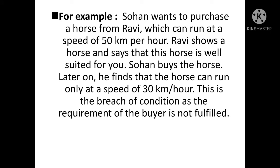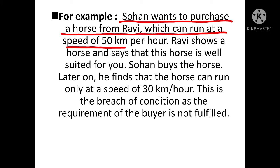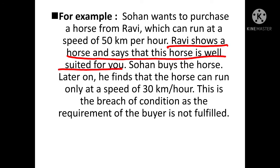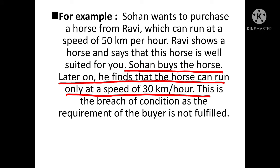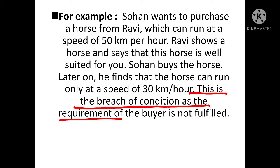अब example देखते हैं। Sohan wants to purchase a horse from Ravi which can run at a speed of 50 km per hour। Sohan की condition है कि horse 50 km per hour की रफ़्तार से दौड़े। Ravi shows a horse and says it is well suited for Sohan। Sohan horse खरीद लेता है। Later on he finds the horse can run only at a speed of 30 km per hour।